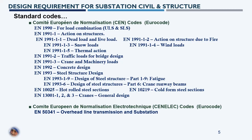EN 1991 Part 3 is for crane and machinery loads, required for designing foundations for cranes and machinery used during equipment installation at substations. EN 1992 and EN 1993 cover concrete and steel structure design respectively, with Part 1 Section 9 for fatigue load and Part 6 for crane runway beams. EN 10025 is for hot-rolled sections and EN 10219 is for cold-formed steel sections.